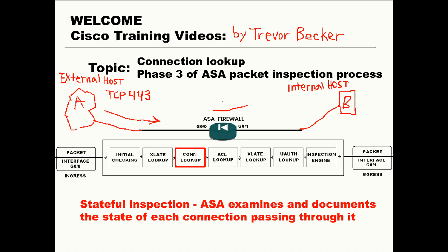The return traffic is going to match that flow because it's destined for host A and the source is host B, returning content that was requested over port 443. Since all the parameters match for the return traffic, the return connection is going to match that flow in the connection table and get permitted through the firewall back to the external host A.